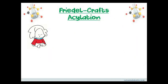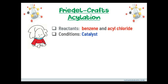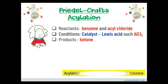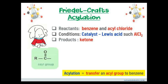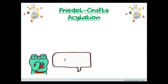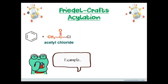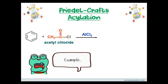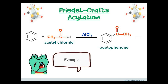The last reaction is Friedel-Crafts acylation, with acyl chloride as the reactant in the presence of a Lewis acid, where the product usually contains a ketone functional group. Acylation means to transfer an acyl group to benzene. For example, benzene reacts with acetyl chloride in the presence of AlCl3; the products formed are acetophenone and HCl.